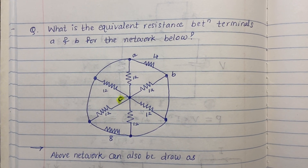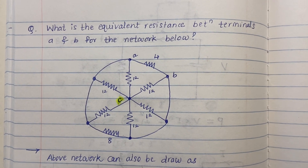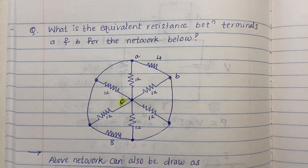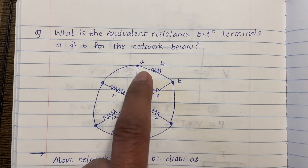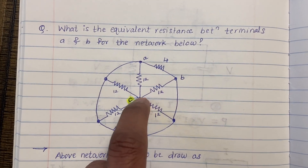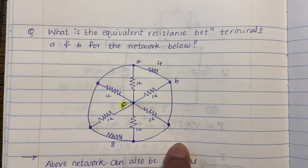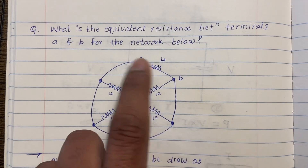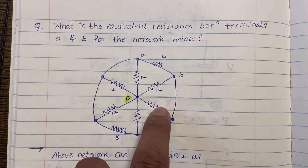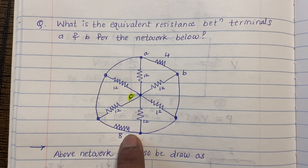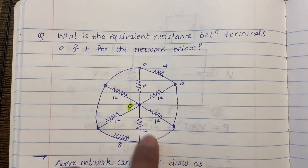Good morning friends, today we are going to study how to find an equivalent resistance for a circuit or network given in this diagram. We have a circular network with points A and B, and a point C at the center of the circle. There are resistances of 12Ω, 12Ω, 12Ω, 12Ω, 12Ω, 12Ω, and one 8Ω. The question is: find the equivalent resistance between points A and B.